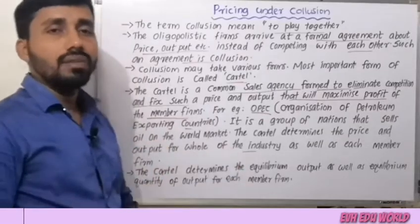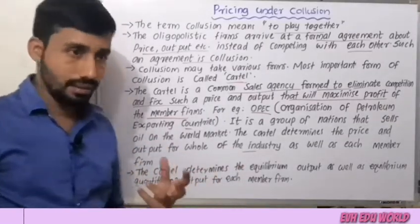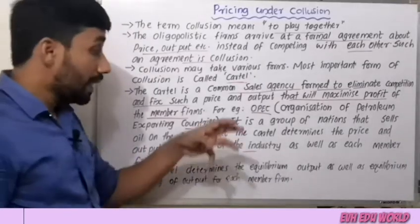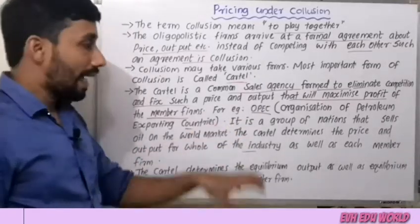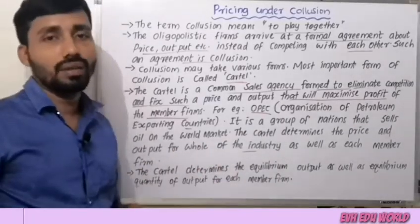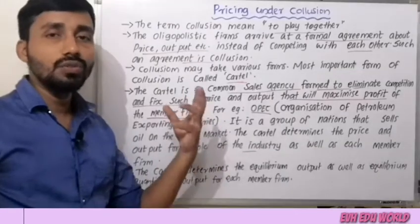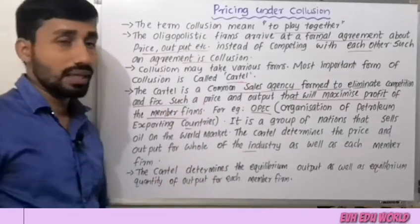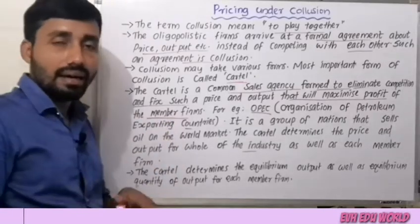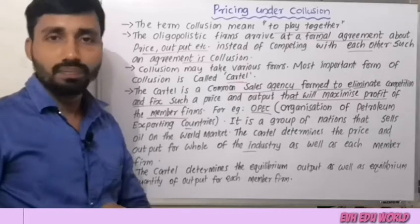The cartel determines the equilibrium output as well as the equilibrium quantity of output for each member firm. All firms are equal to the equilibrium point — equilibrium output and price.